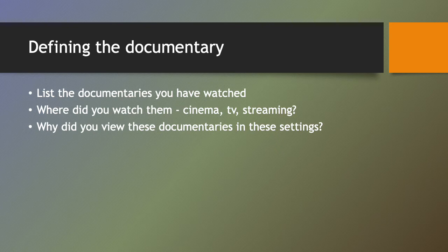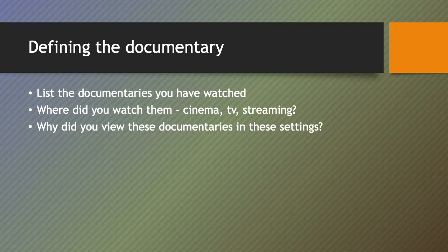With that done, note down next to them where you watched them. Have you seen any of these documentaries in the cinema? Have you seen any on TV, or did you stream them? Note those down next to each documentary. Then think about why you viewed them in those settings. For instance, I chose to watch the Michael Jordan documentary on Netflix because it was convenient — I could watch as many or as few episodes as I wanted, and I could see the whole narrative of his career through that series.